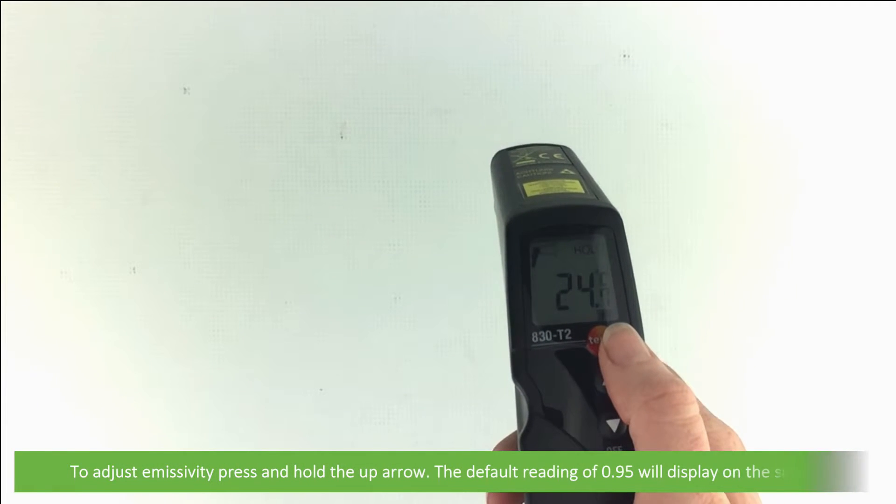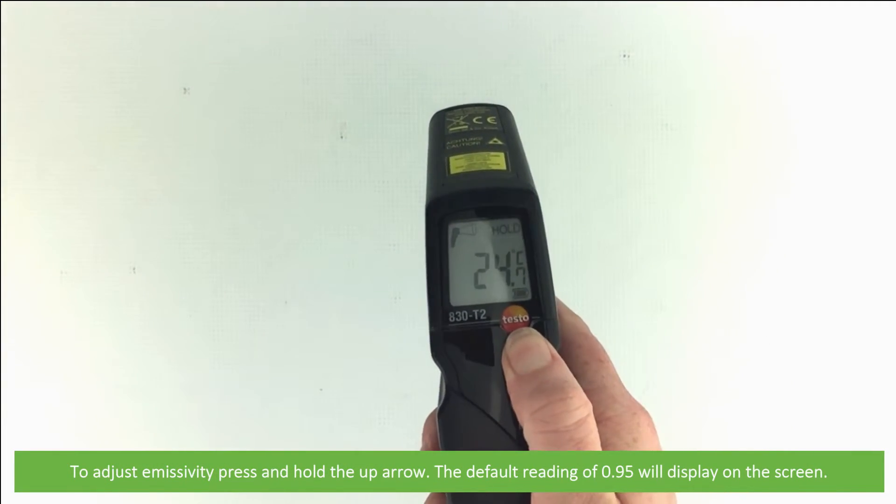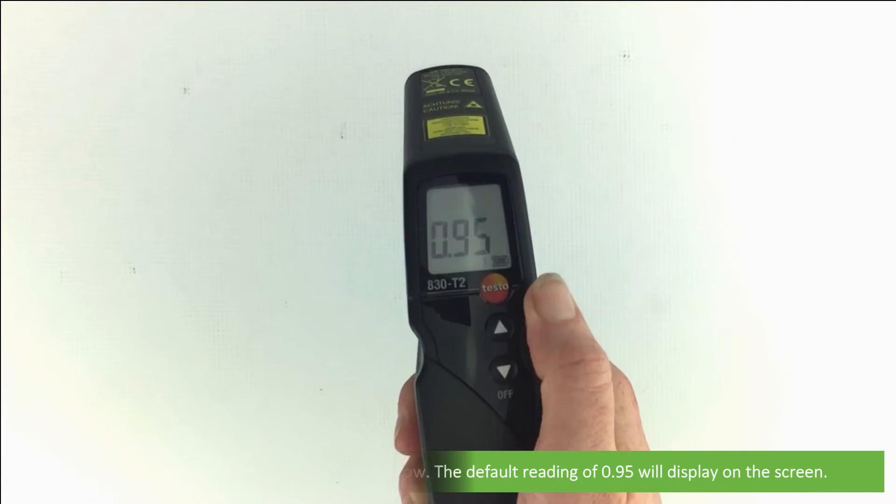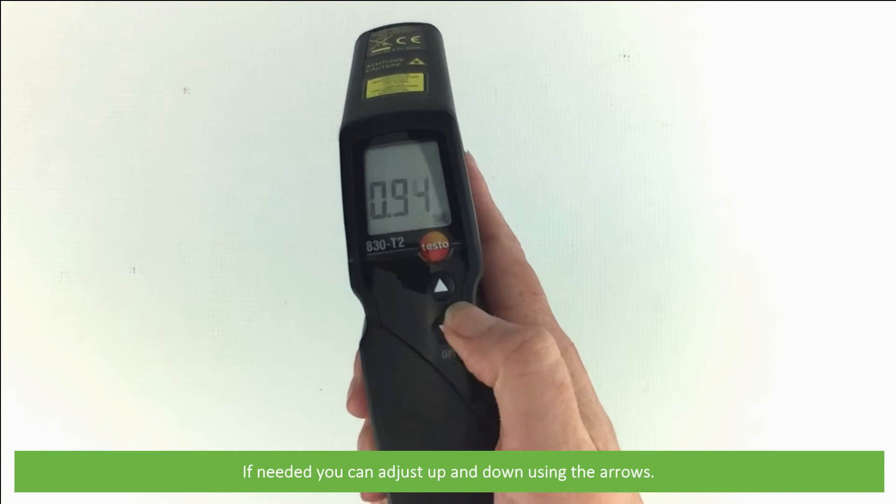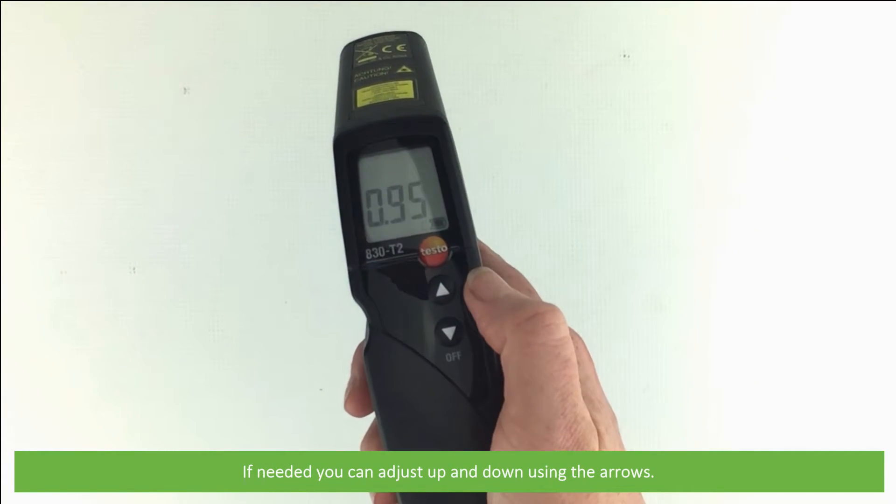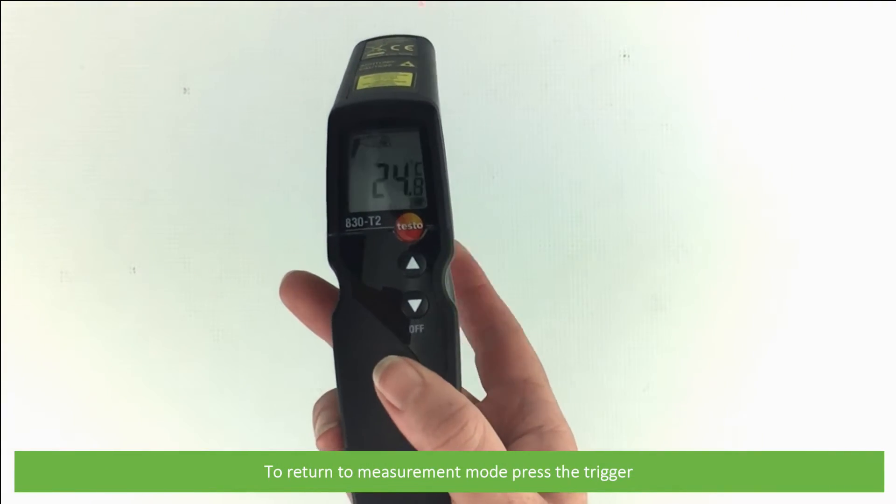To adjust emissivity press and hold the up arrow. The default rating of 0.95 will display on the screen. If needed you can adjust up and down using the arrows. To return to measurement mode press the trigger.